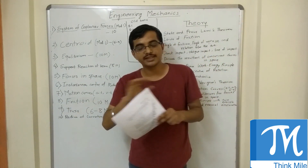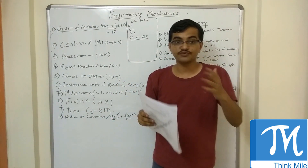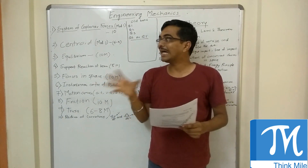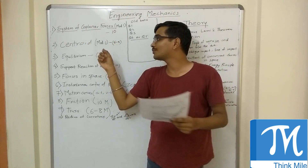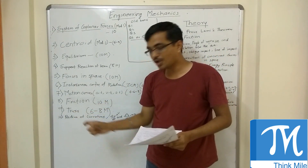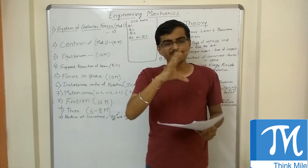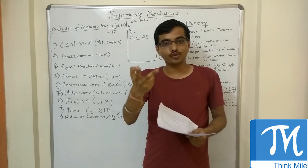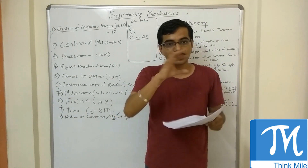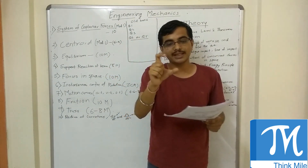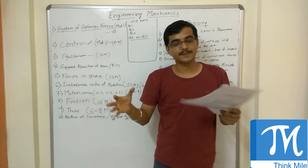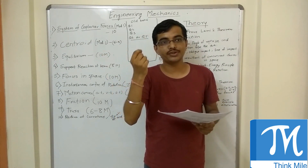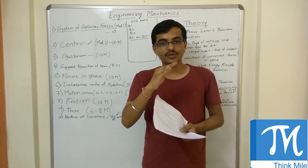Trusses — around six to eight marks, in every paper. I don't recommend solving trusses first; solve it at the end because it takes a lot of time. But again, it is based on system of coplanar forces and equilibrium. There are two methods and in the exam mostly both methods are asked, but they will not tell you to find everything — just a few selected members. Previously these sums were asked for 15 marks, now reduced to 8 marks and they are simpler. Try to analyze the sum and solve — you can fetch six to eight marks very easily.